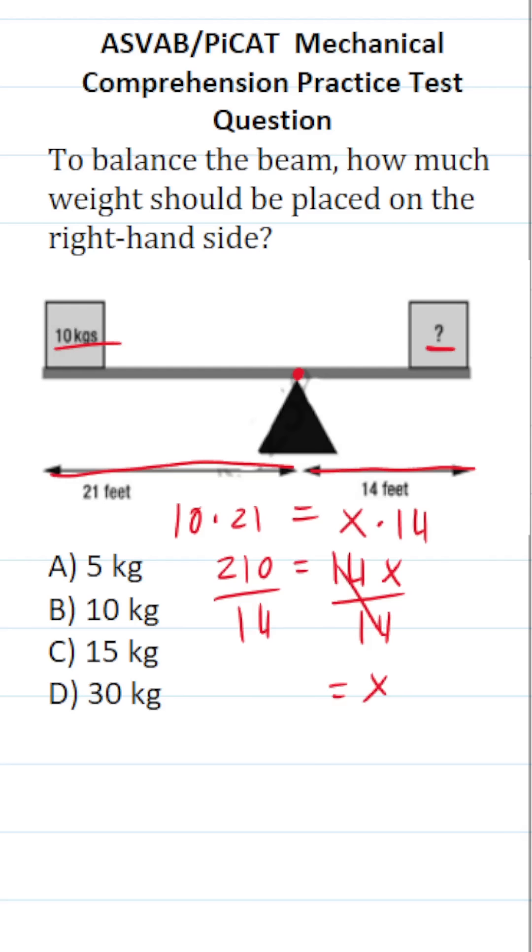You should recognize that 210 and 14 have a common factor of 7, so we're going to try to reduce this as much as possible before we do any division. 210 divided by 7. 21 divided by 7 is 3. Therefore, 210 divided by 7 is 30. 14 divided by 7 is 2. 30 divided by 2 is 15.